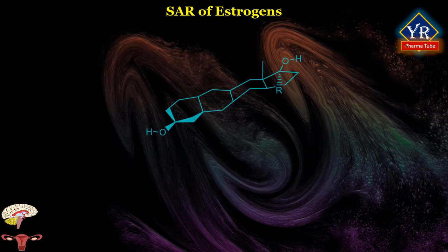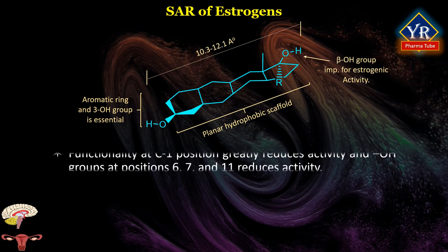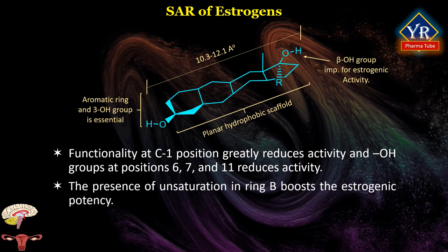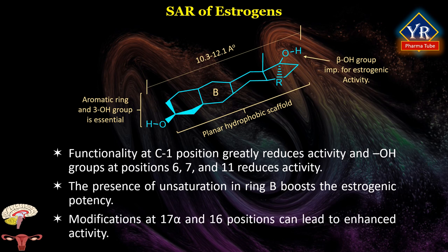Structure-Activity Relationship of Estrogens: Functionality at the C1 position greatly reduces activity, and hydroxyl groups at positions 6, 7, and 11 also reduce activity. The presence of unsaturation in ring B boosts estrogenic potency. Certain modifications at the 17-alpha and 16 positions can lead to enhanced activity.